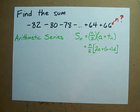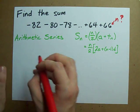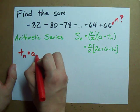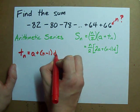To do that, we need to use the formula for an arithmetic sequence. That's t of n equals a plus n minus 1 times d.